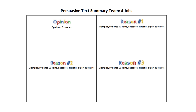So the first team is going to make a summary of this persuasive text. Person number one in the team is going to tell us the writer's opinion and the three reasons that they give for their opinion.